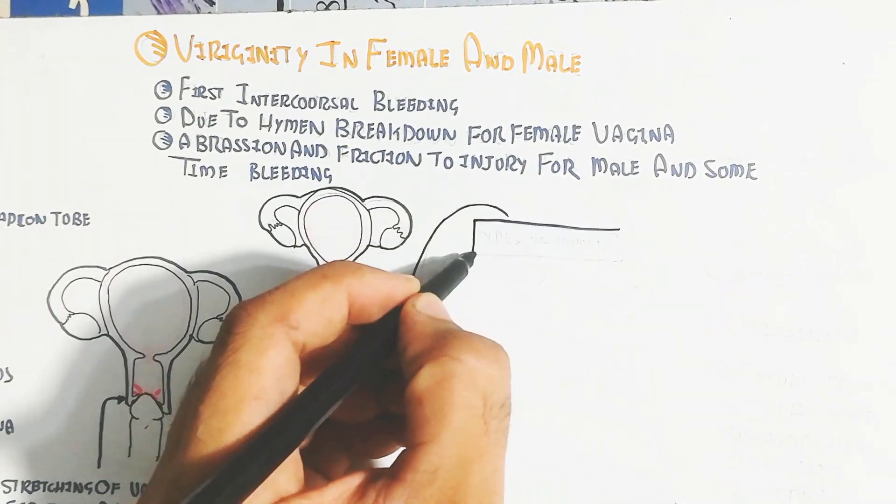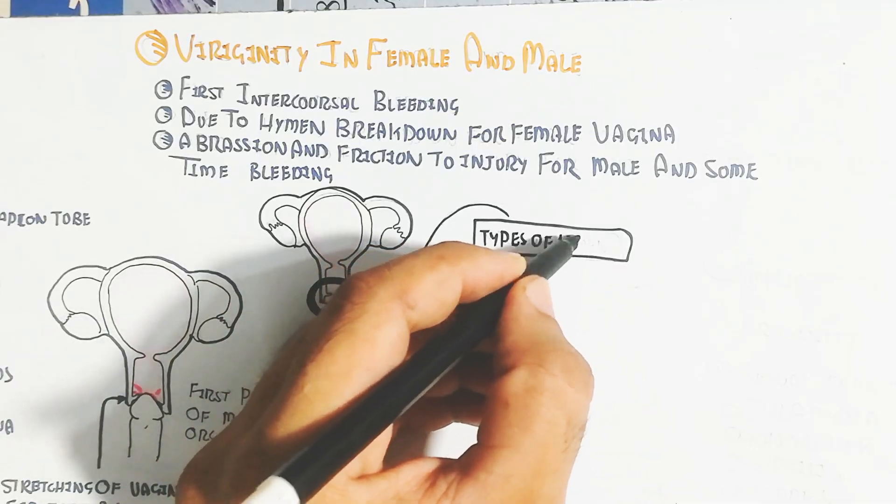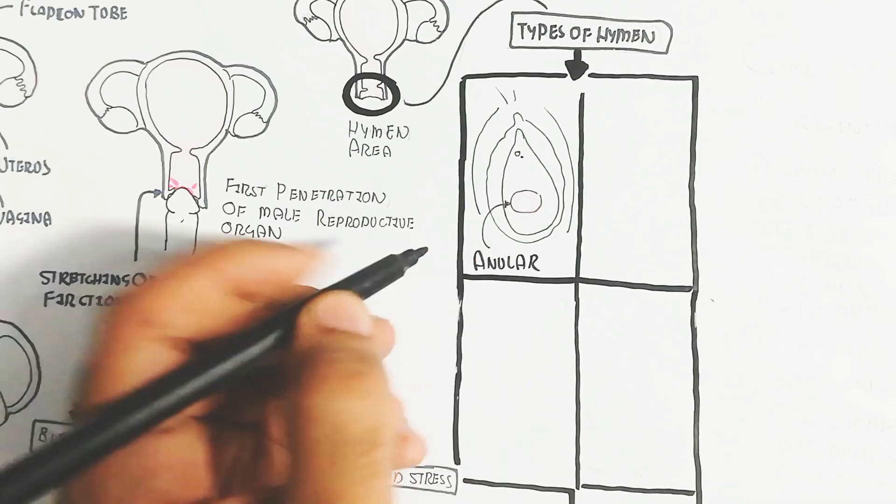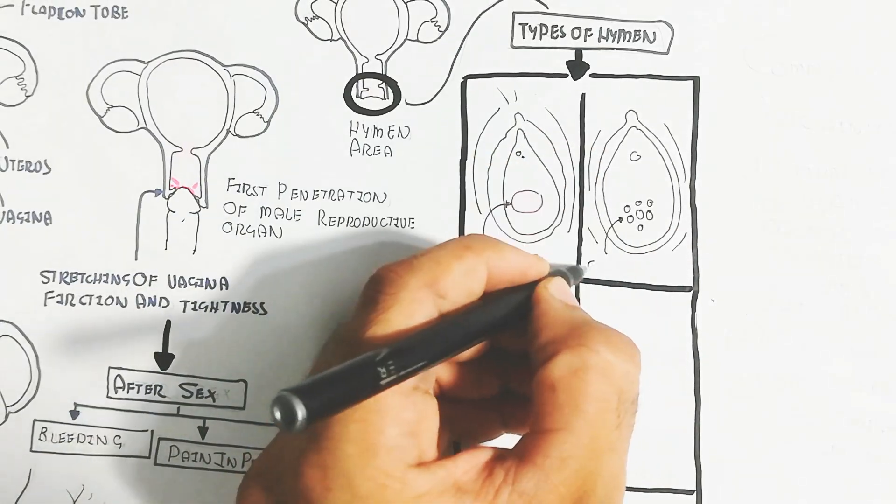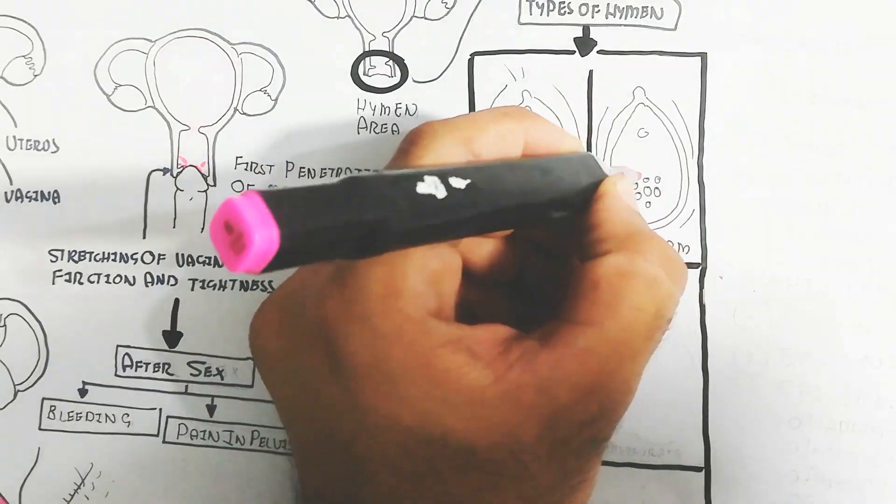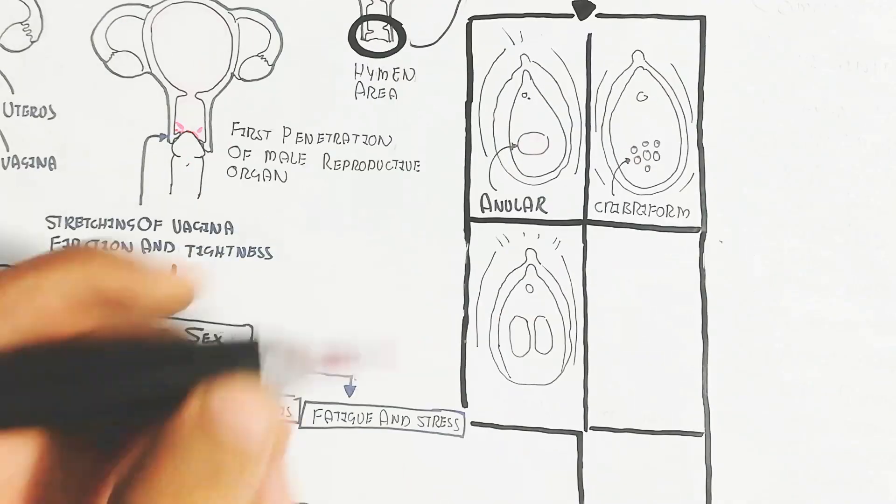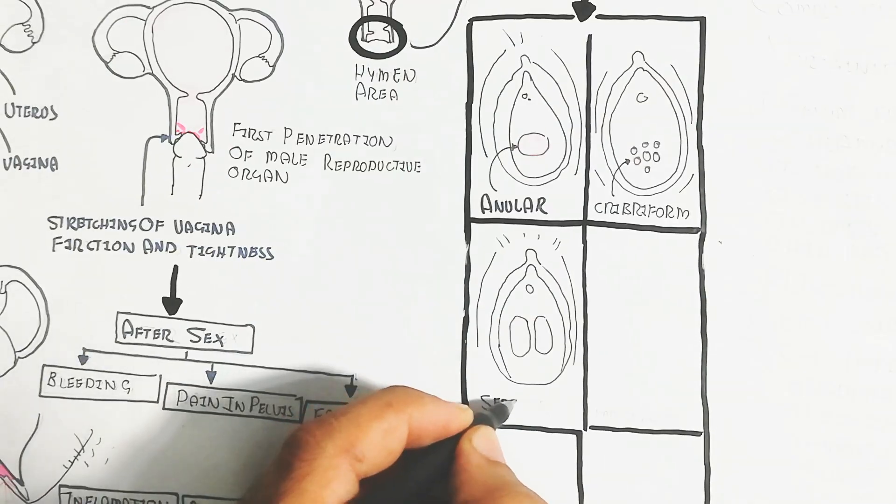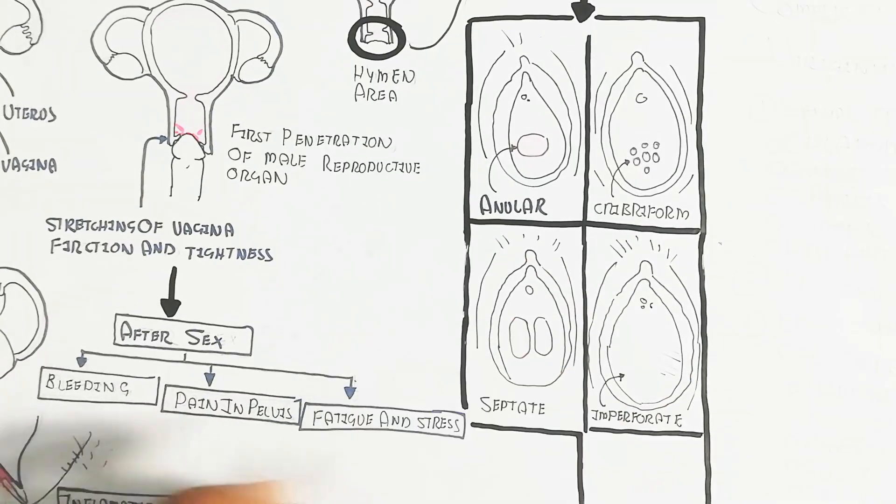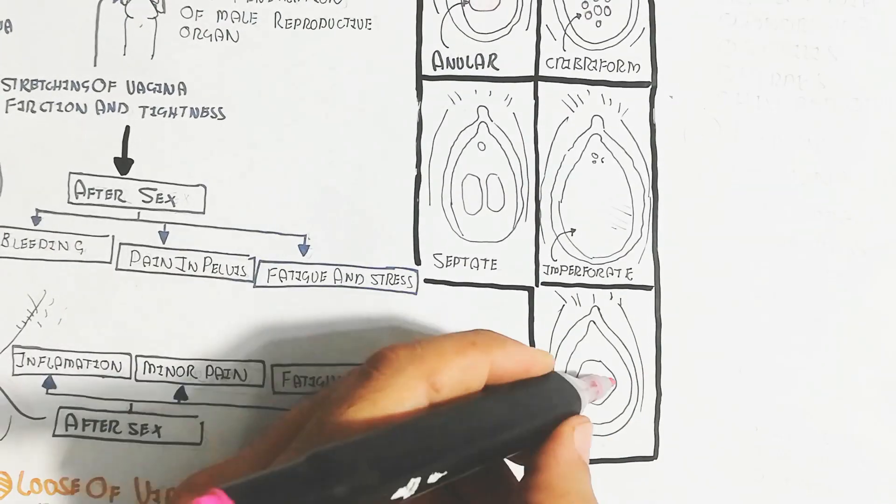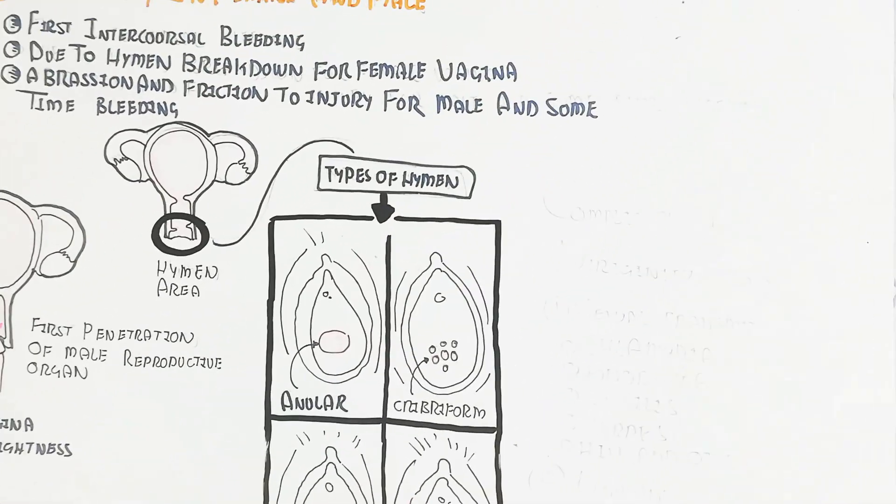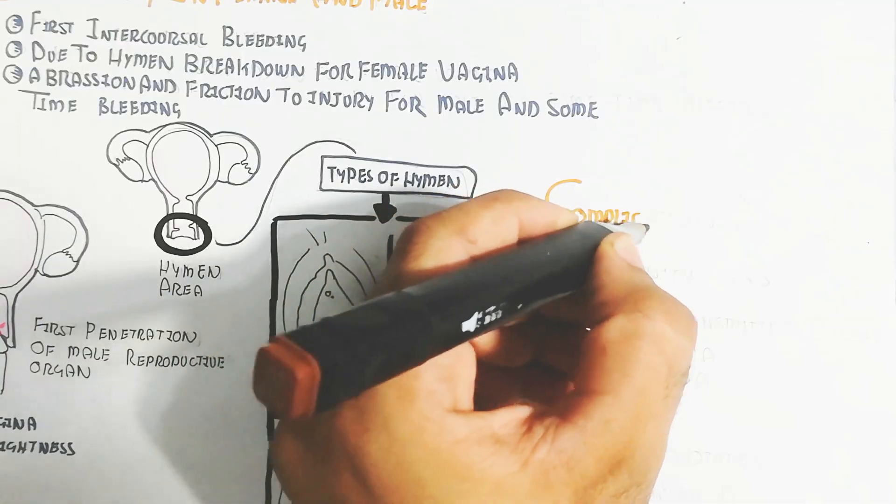This is the hymen area. Let's understand the types of hymen and the chances of loss of virginity without intercourse. Annular is difficult to rupture. Cribriform has more rupturing chances. Septate has less chance. Imperforate has more chance to rupture before first intercourse. Parous has less chance.